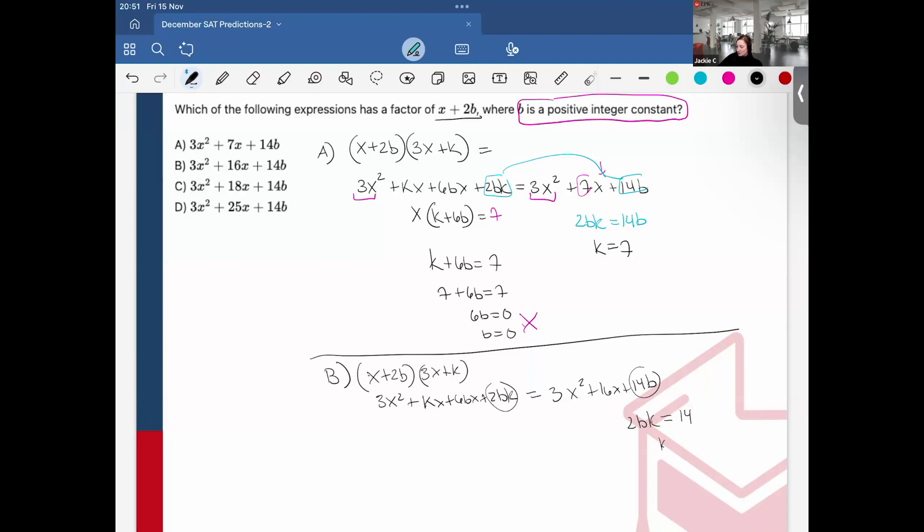And then k + 6b is now equal to 16. So 7 + 6b = 16. 6b = 9. And then it's 9/6, which is 3/2. So that would be another fraction, so it doesn't work.